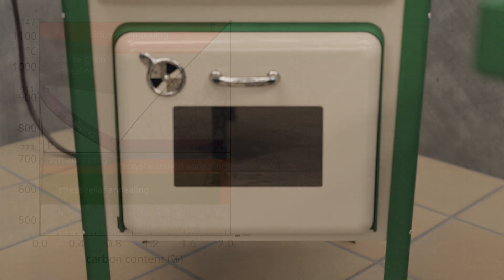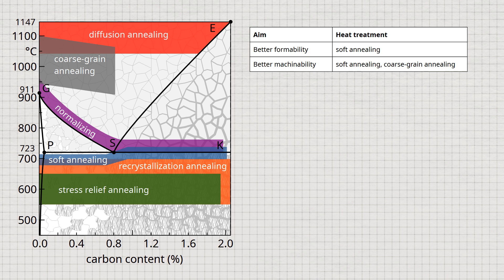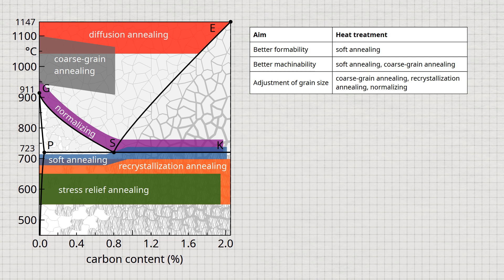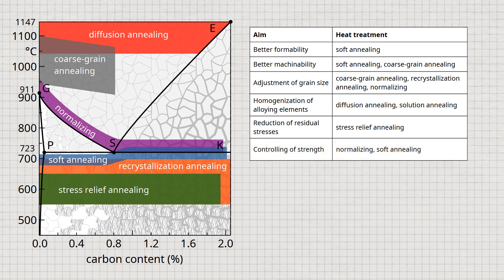Finally, the most important annealing processes and their objectives are briefly summarized. The goal of improved formability can be achieved by soft annealing, which also improves machinability. Coarse-grain annealing is usually carried out on low-carbon steels for machinability. The setting of a certain grain size can be achieved not only by coarse-grain annealing, but also by normalizing or recrystallization annealing. In the latter two, the focus is usually on achieving a fine-grained and homogeneous microstructure. Diffusion or solution annealing is used to homogenize the alloying elements or to remove precipitates. When the aim is to reduce residual stresses, stress-relief annealing is used. For strength requirements, normalizing is used for higher strength or soft annealing for lower strength and better formability.